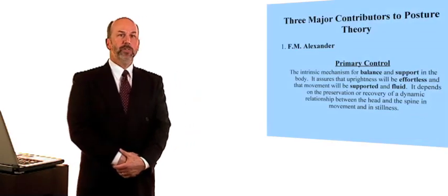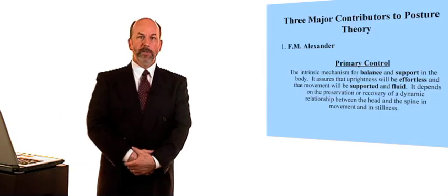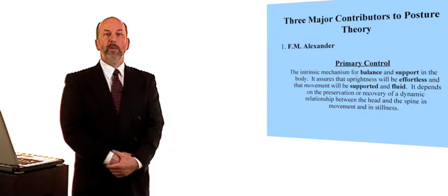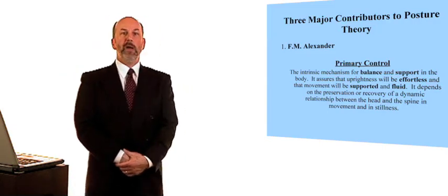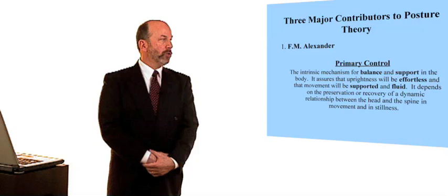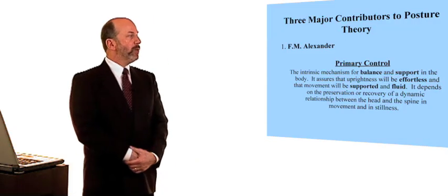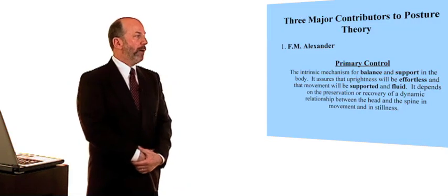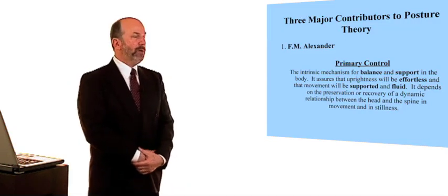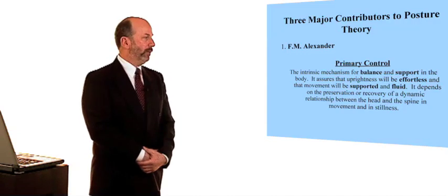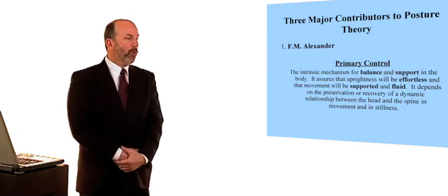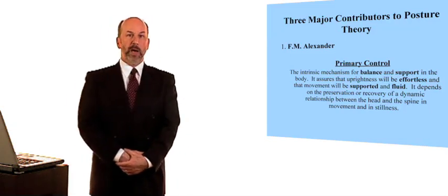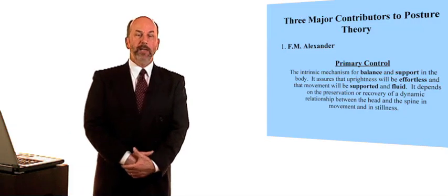We'll take a few minutes to discuss the work of three pioneers in our present understanding of posture theory. The first is the work of F.M. Alexander. Alexander coined the term primary control. Primary control is defined as the intrinsic mechanism for balance and support in the body. It assures that uprightness will be effortless and that movement will be supported and fluid. It depends on the preservation or the recovery of a dynamic relationship between the head and the spine in movement and in stillness.